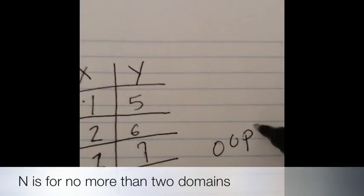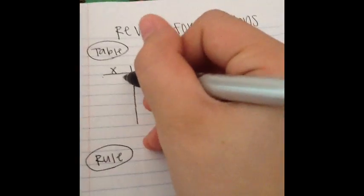O is for plotting on the graph, N is for no more than two remains, S is for solving table, rule, and graph down in the function world. Let me spell it for you.